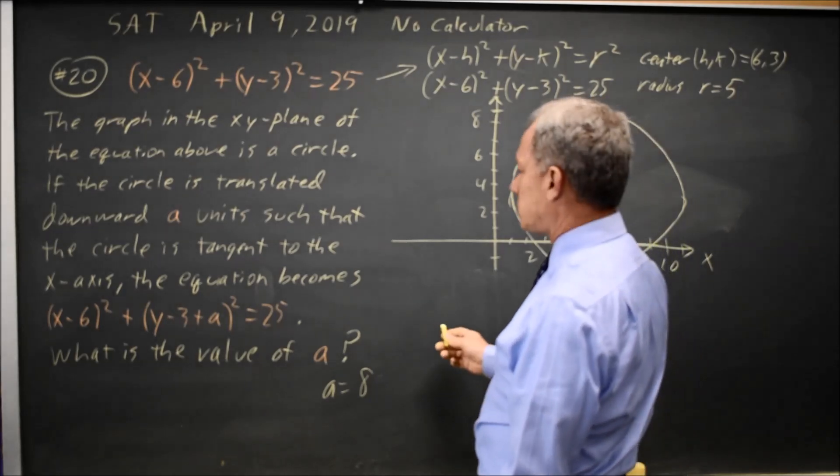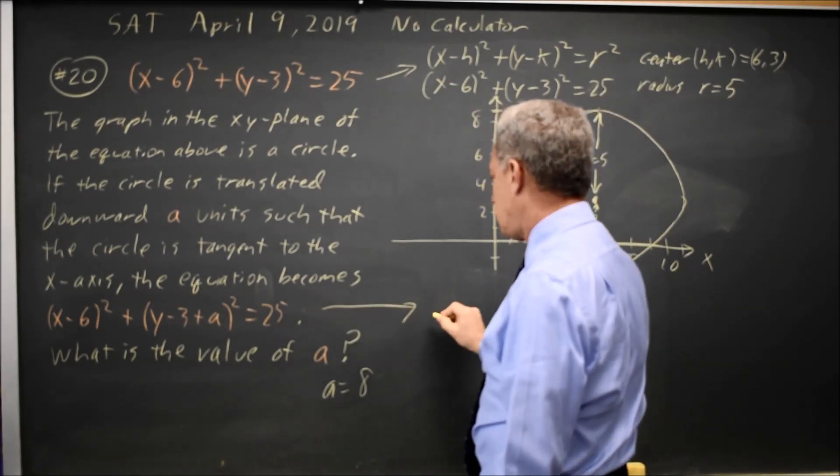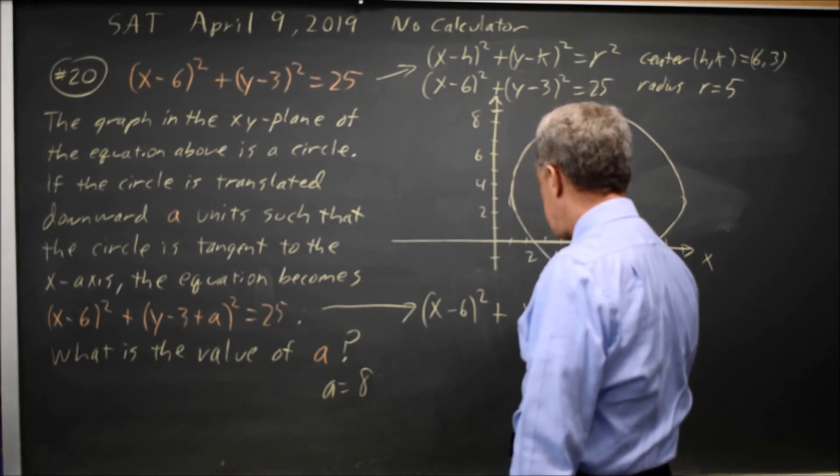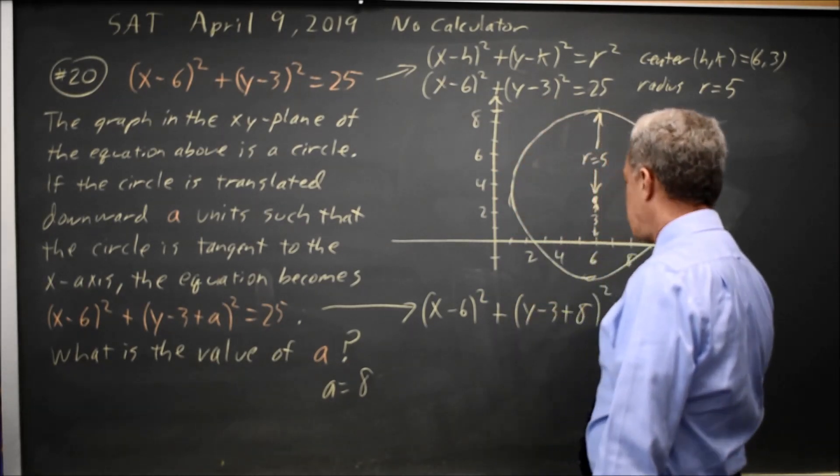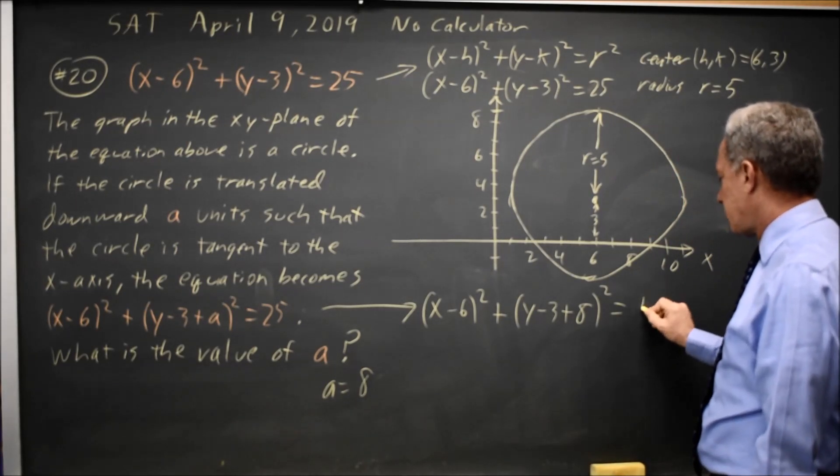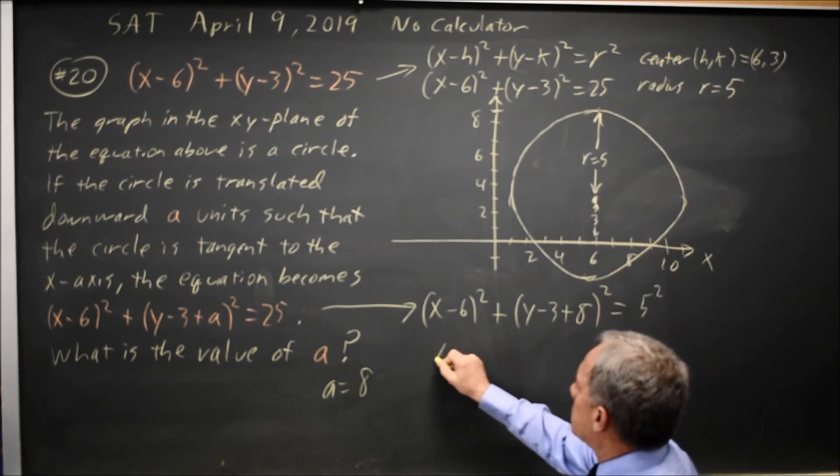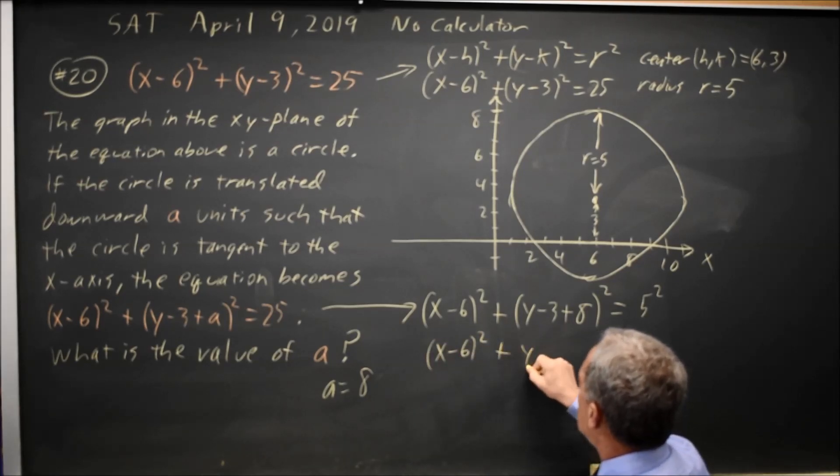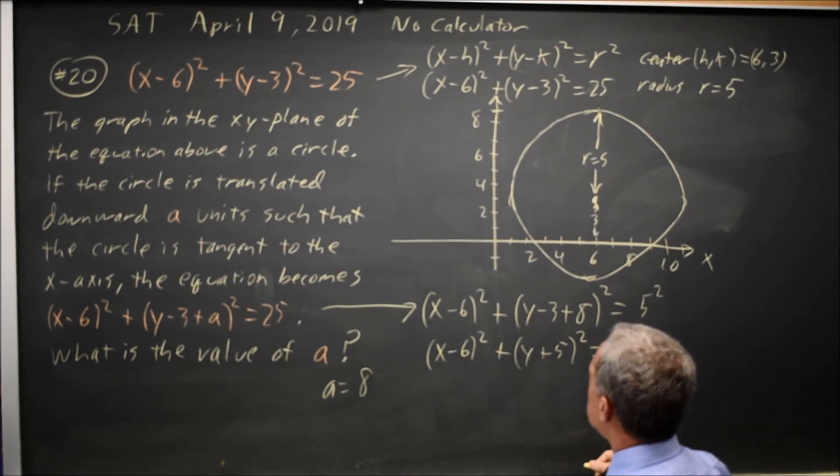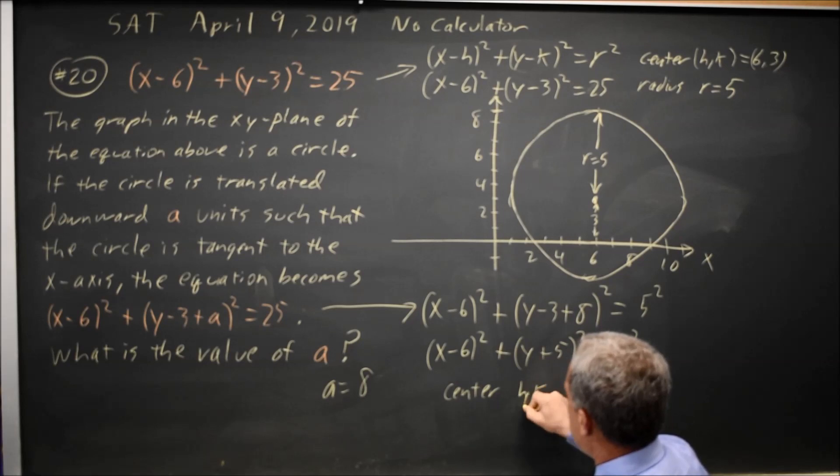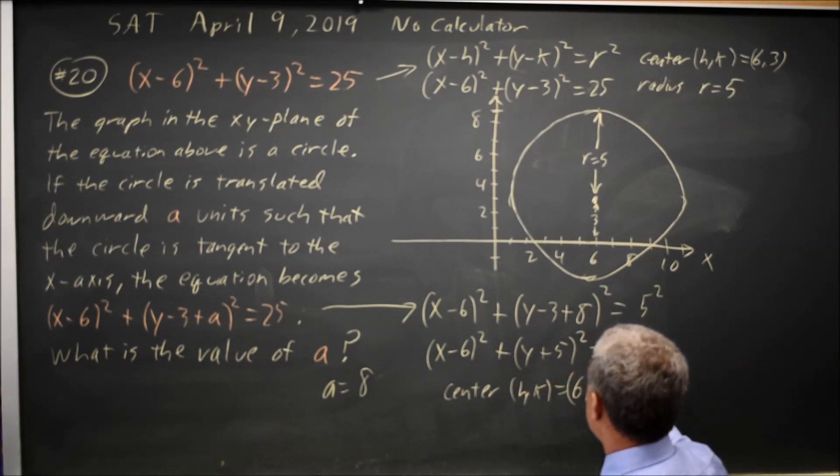And let's check that in this equation. x minus 6 squared plus y minus 3 plus 8 squared equals 25, which is 5 squared. That is x minus 6 squared plus y plus 5 squared equals 5 squared. And my center is hk equals 6 negative 5 and radius r equals 5.